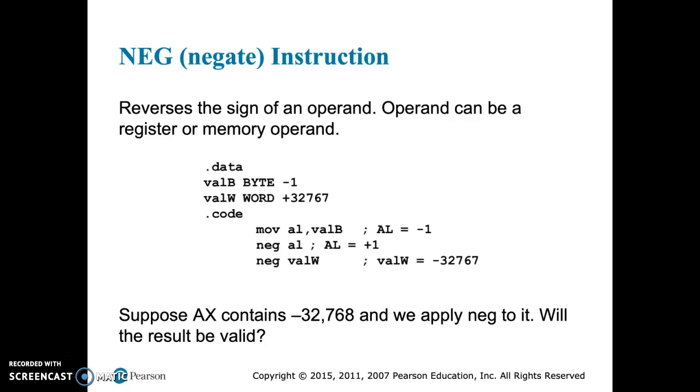At the bottom there, our value for 16-bit is negative 32768 to plus 32767 for signed values. So if we take a value of negative 32768 and we negate it, that register does not allow for a value of positive 32768. It only goes to 32767.